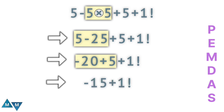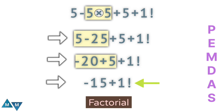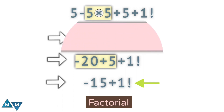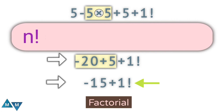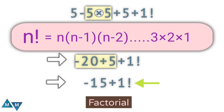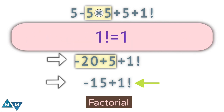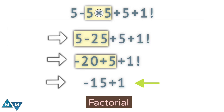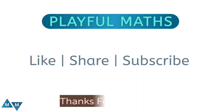What is a factorial in mathematics? When a number has an exclamation mark after it, we call it a factorial. You take a number and multiply its predecessors until 1 arrives. 1 factorial equals 1. So the expression becomes minus 15 plus 1, which equals minus 14. This is our final answer. Thanks for watching.